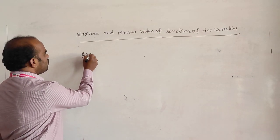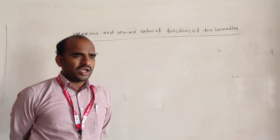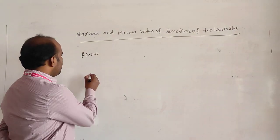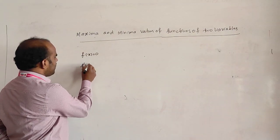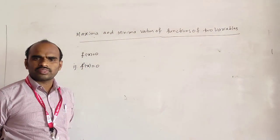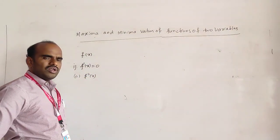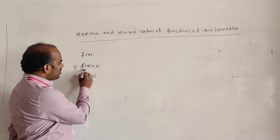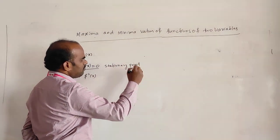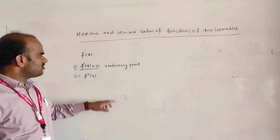Suppose f of x is a function of single variable. To find for what value of x the function f of x gets the maximum or minimum value, we have to find the first-order derivative and set it equal to zero, then find the second-order derivative. By equating the first-order derivative to zero we can find the stationary points.